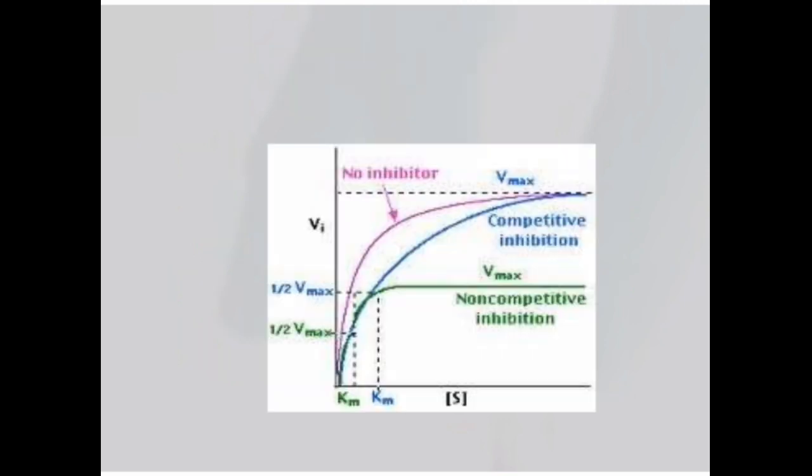In this graph you can see graphical representation of non-linearity, the non-linearity in non-competitive inhibition, competitive inhibition, and when there is no inhibition in pharmacokinetics.